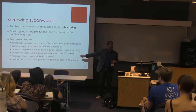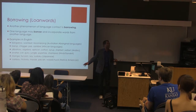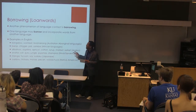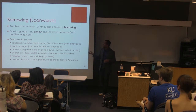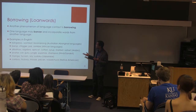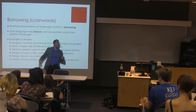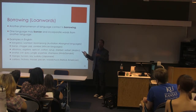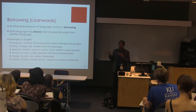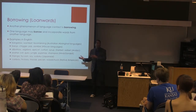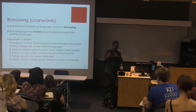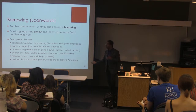Arabic has contributed a lot of words, especially if you get into mathematics. There's a little sample here: albatross, algebra, apricot, cotton, syrup, sherbet, sorbet — all of Arabic origin. Any time you see a word that has 'al' in front, that's the definite article — basically 'the' in Arabic. It just didn't register to us when we were borrowing these words that they had 'the' included. So when you take a word like alligator, which means 'the lizard' — 'al' is the definite article and 'agator' is the lizard part.